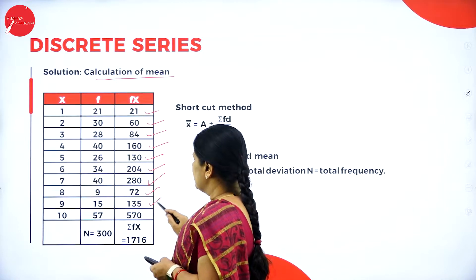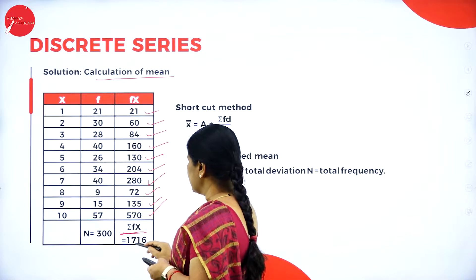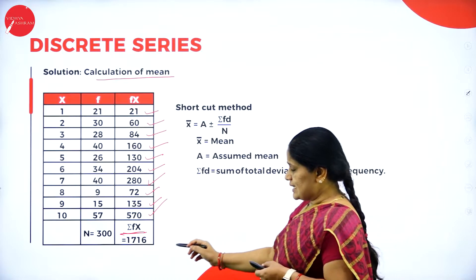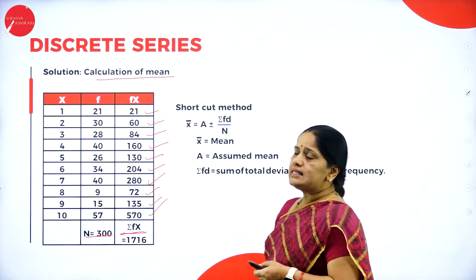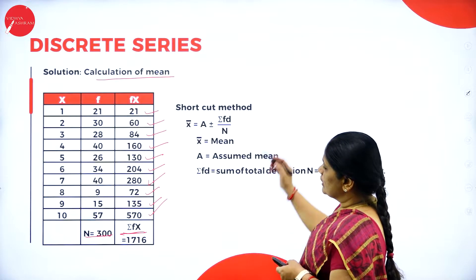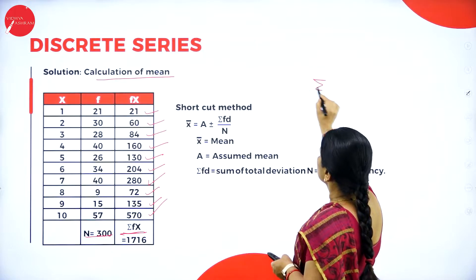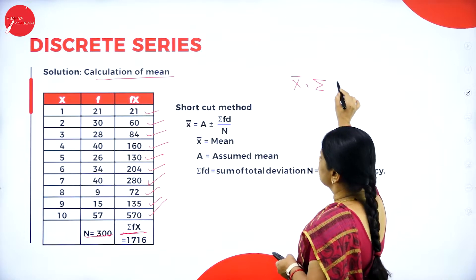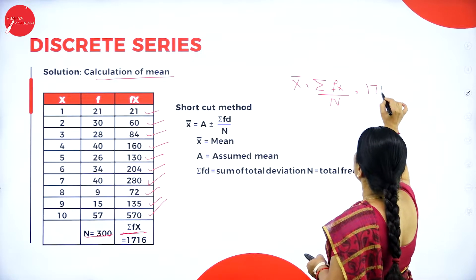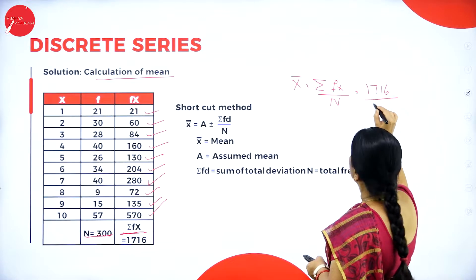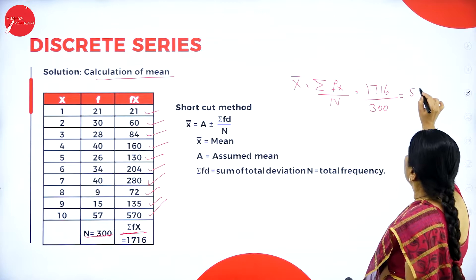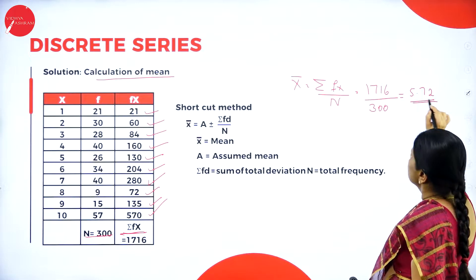The total of sigma fx is 1716, and the total frequency n is 300. Mean = sigma fx divided by n = 1716 divided by 300 = 5.72. So the mean of this problem is 5.72.